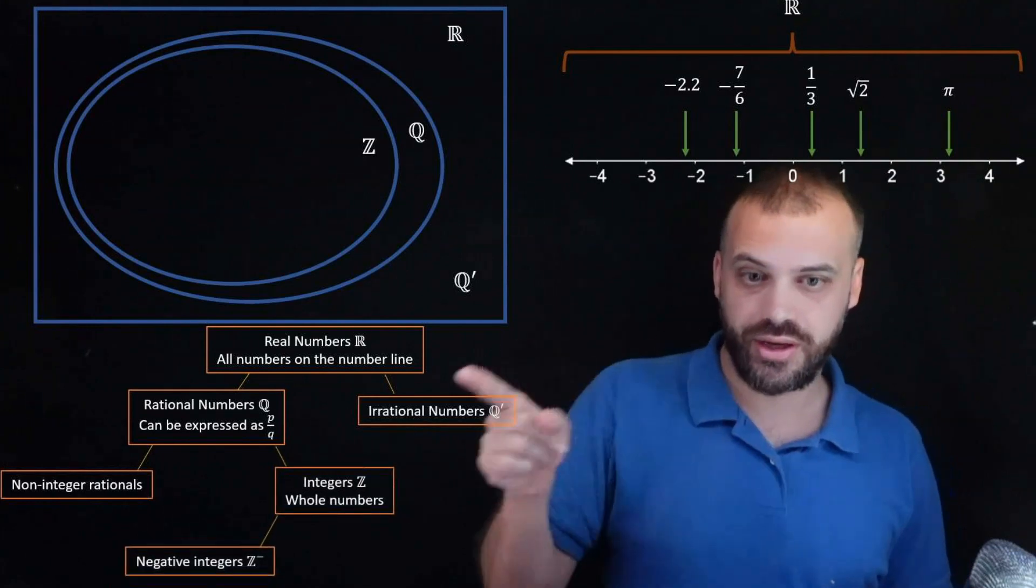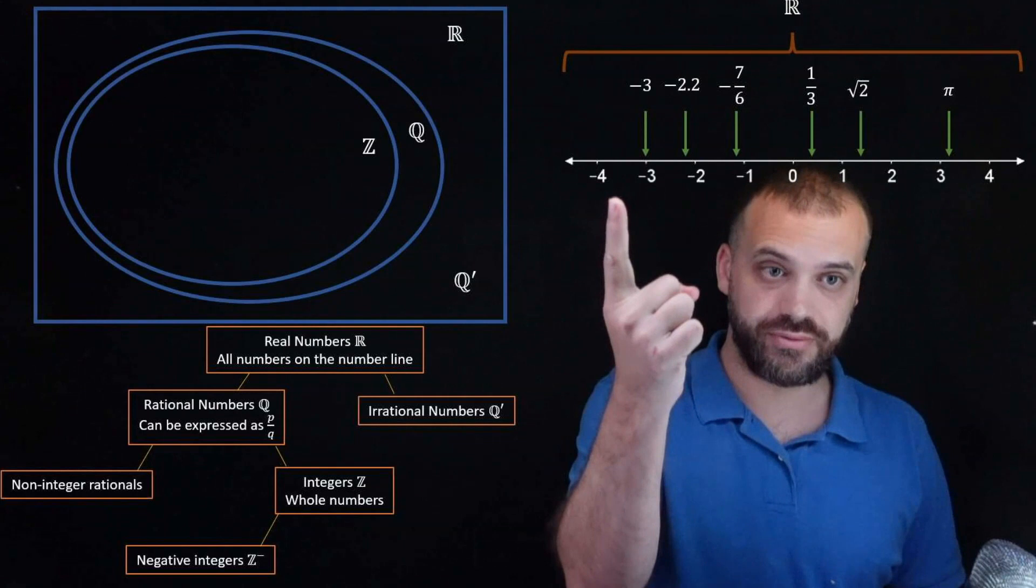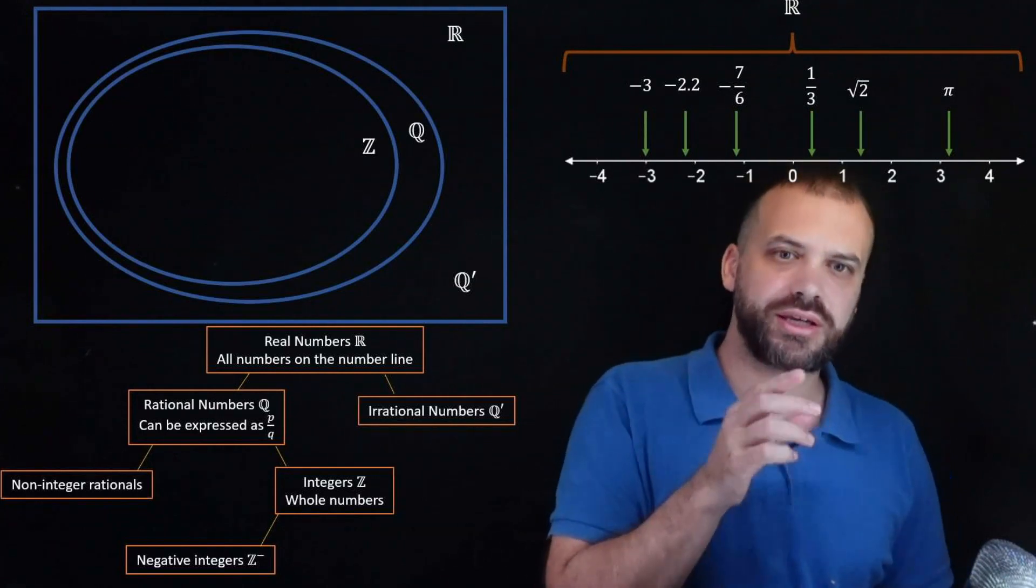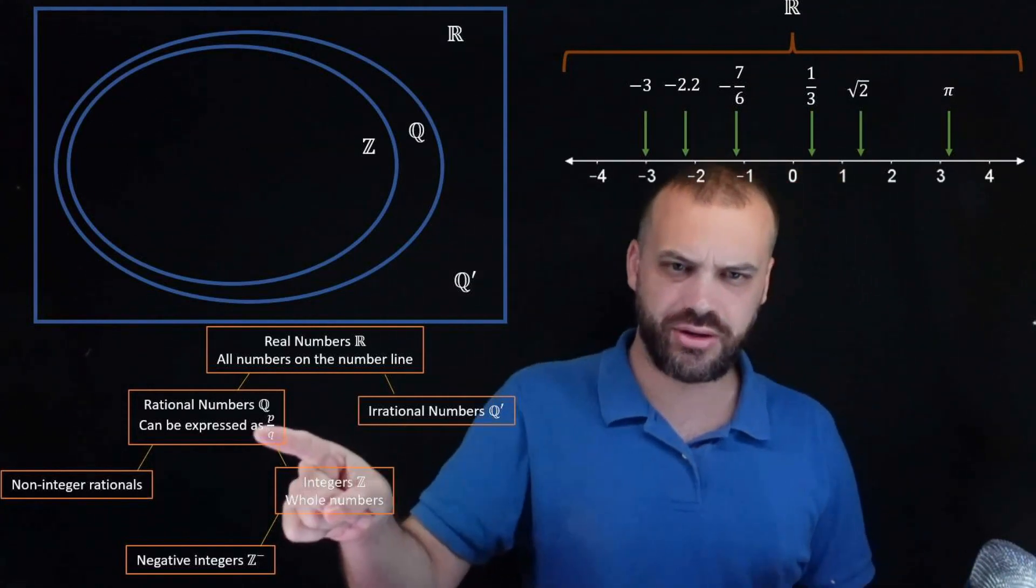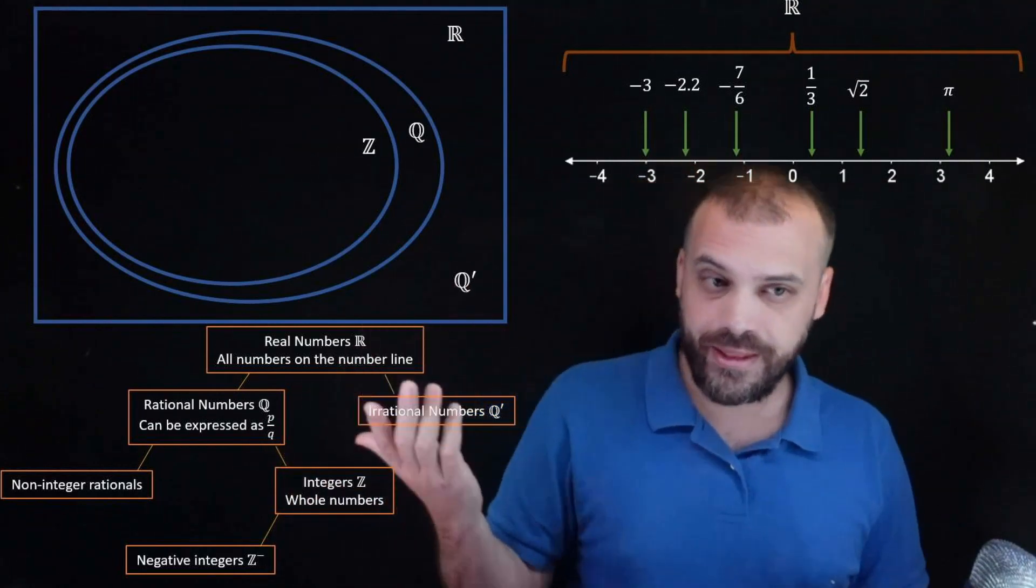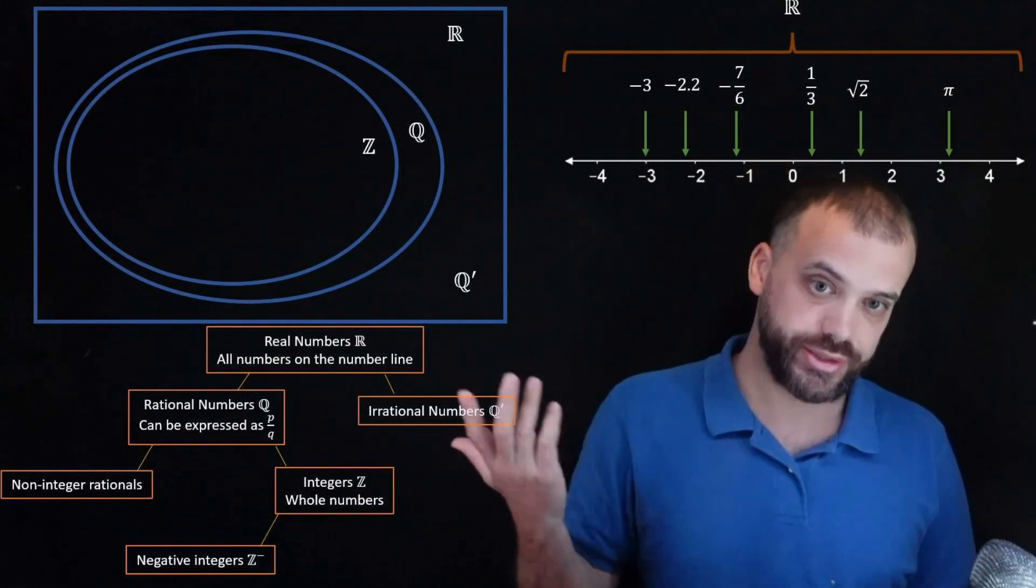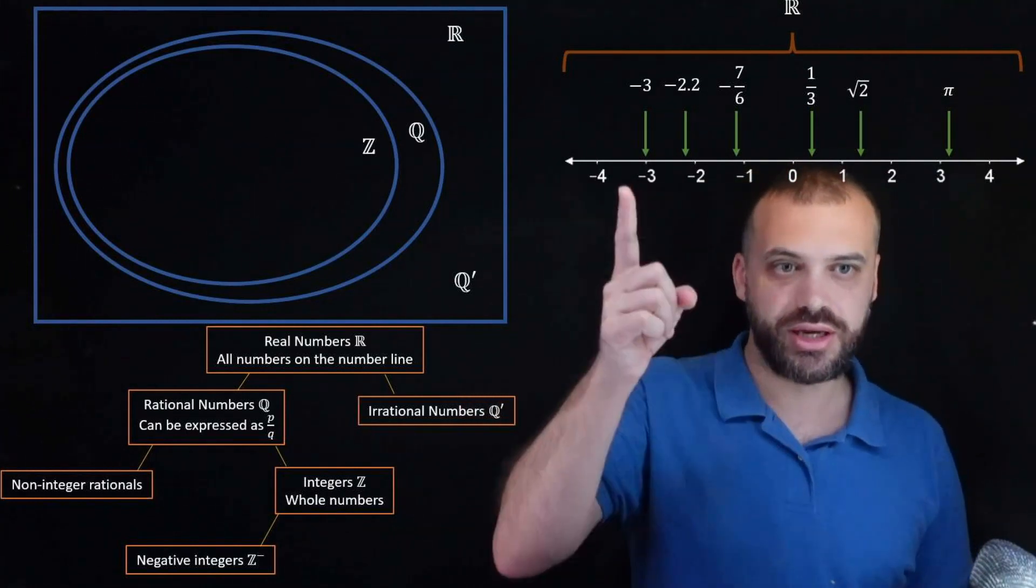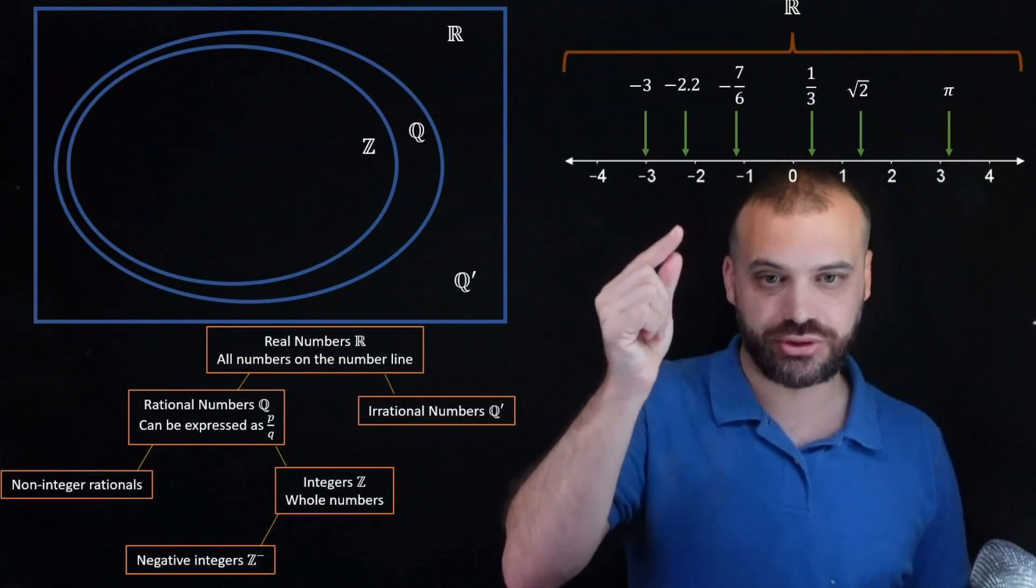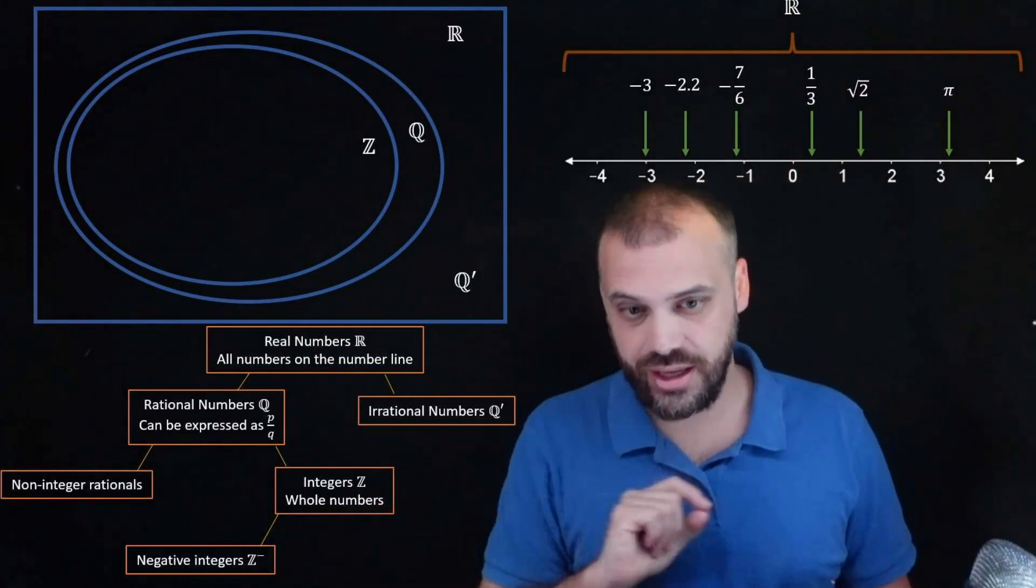We have negative integers, for example, negative 3. Now you might be looking at negative 3 and saying, wait, is that a rational number? Can that be expressed as P over Q? And yes it can. Negative 3 over 1. That's a rational number. So negative 3 is a rational number. It is also an integer. It is a negative integer.